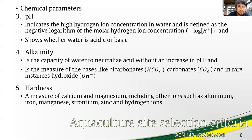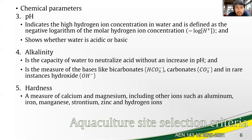pH indicates the hydrogen ion concentration in water and is defined as the negative logarithm of the molar hydrogen ion concentration — this determines the acidity of water. Alkalinity, on the other hand, which is often interchanged with acidity, is the capacity of water to neutralize acid without increasing the pH. It is actually the measure of the bases like bicarbonates (HCO3⁻), carbonates (CO3²⁻), and in other cases, hydroxide (OH⁻).